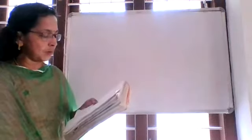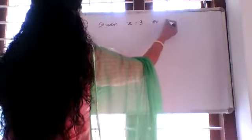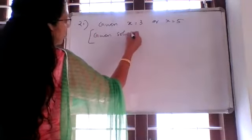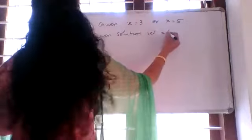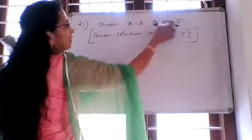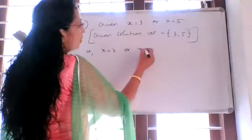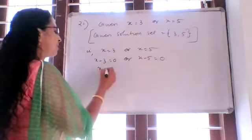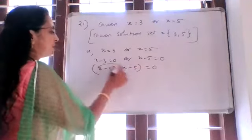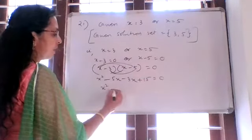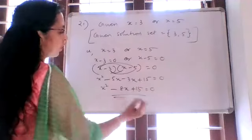Question 21: Find a quadratic equation whose solution set is {3, 5}. Given x equals 3 or x equals 5, this means x minus 3 equals 0 or x minus 5 equals 0. Multiplying: x minus 3 into x minus 5 equals 0. Expanding: x squared minus 5x minus 3x plus 15 equals 0, giving x squared minus 8x plus 15 equals 0 as the quadratic equation.